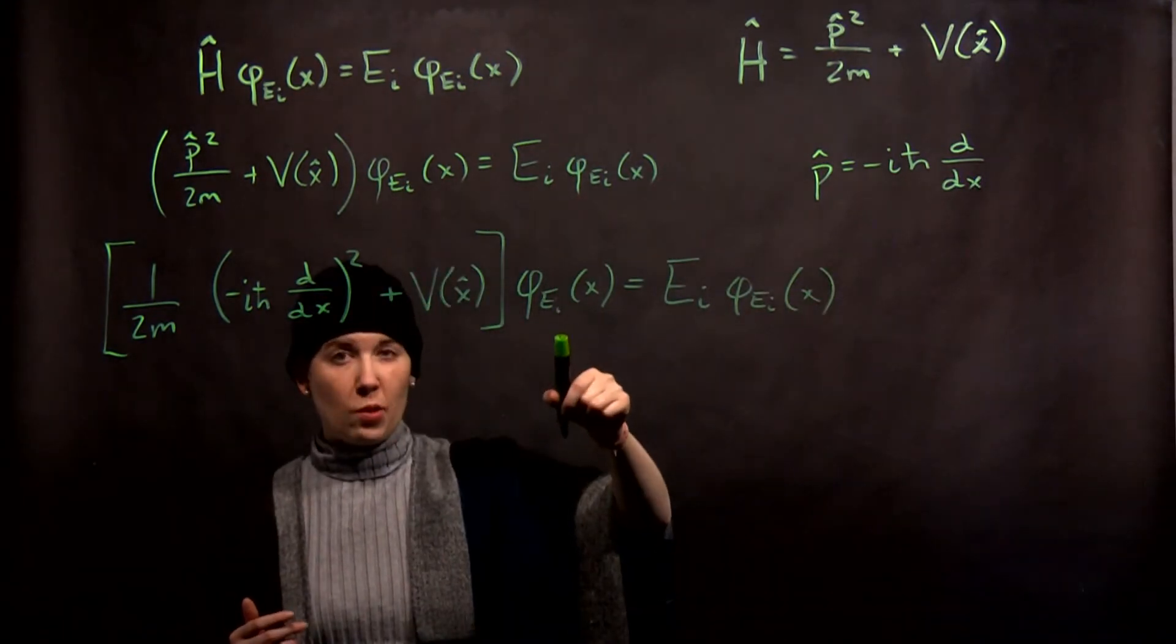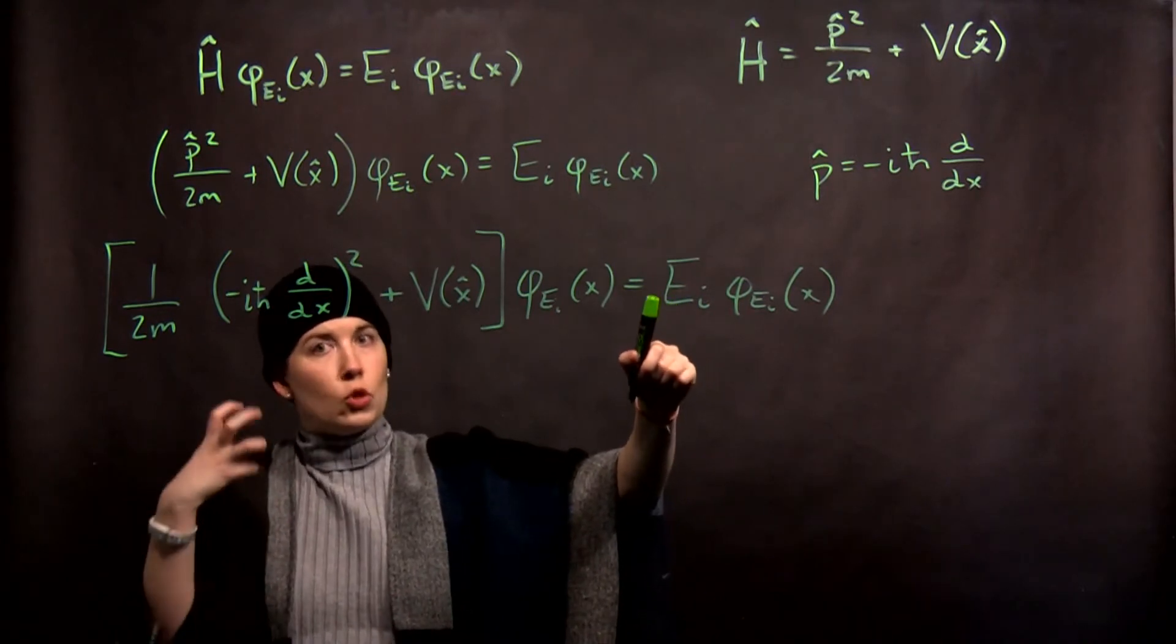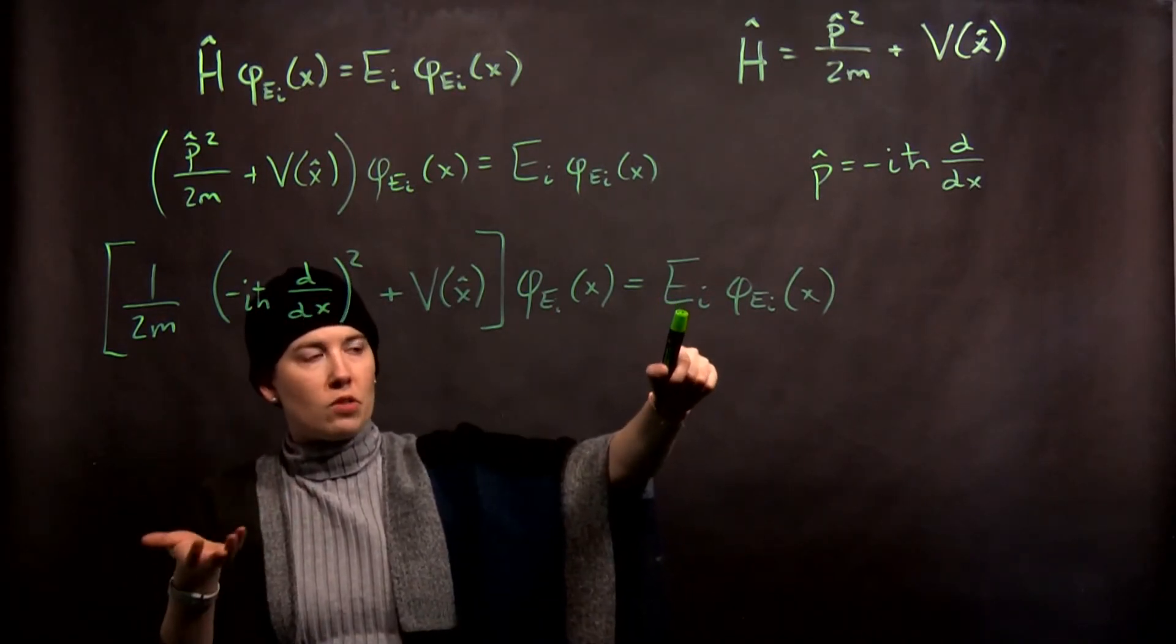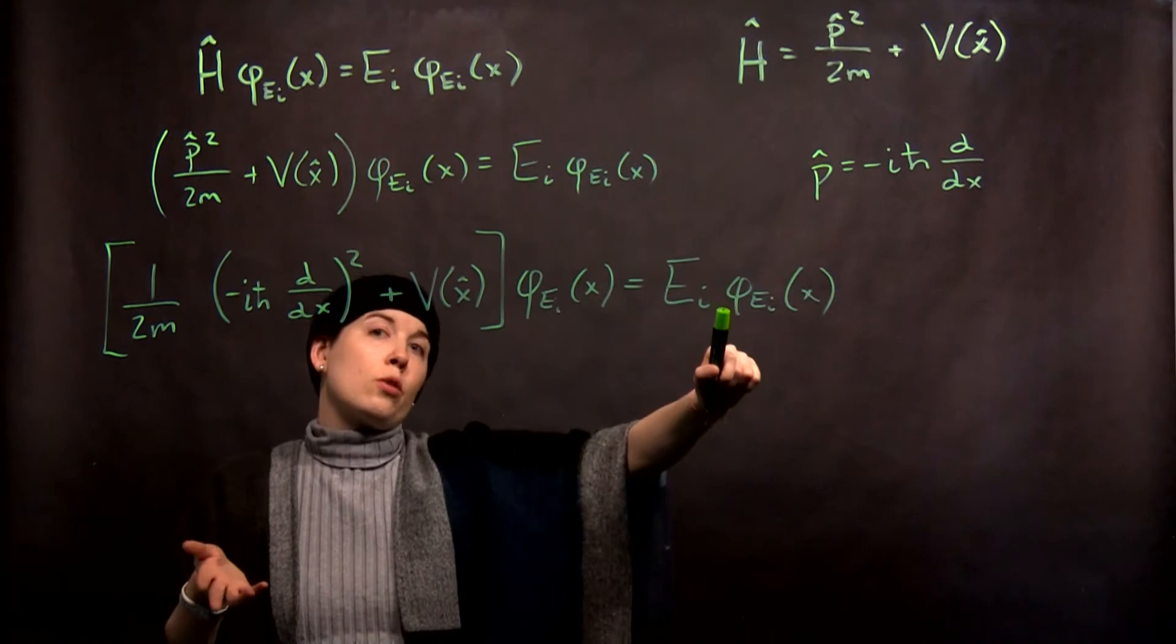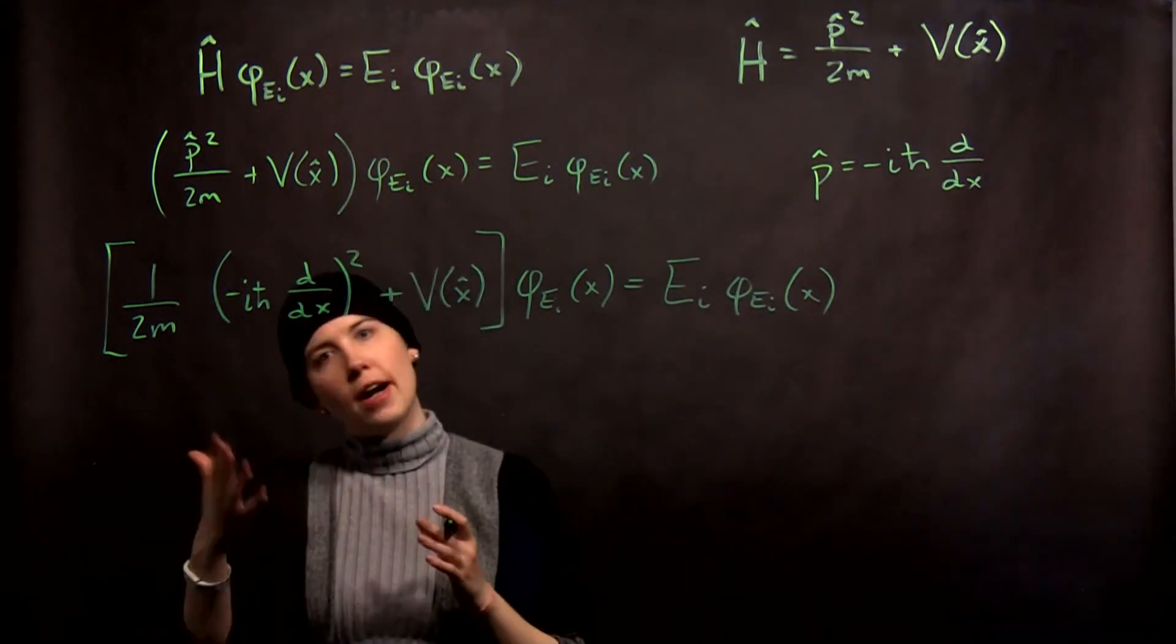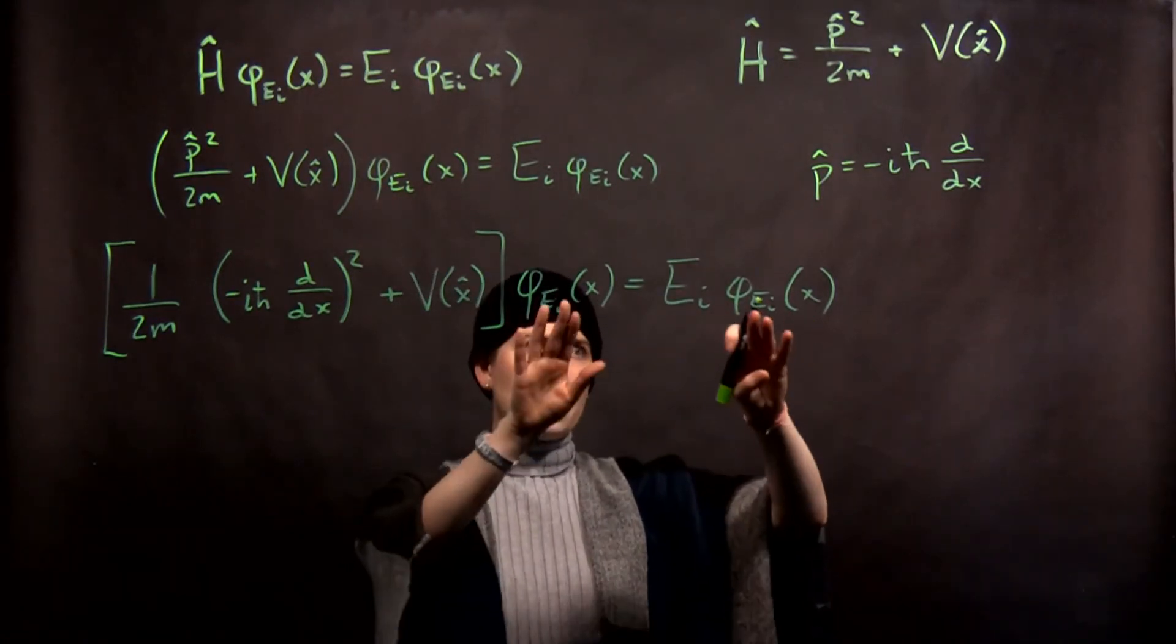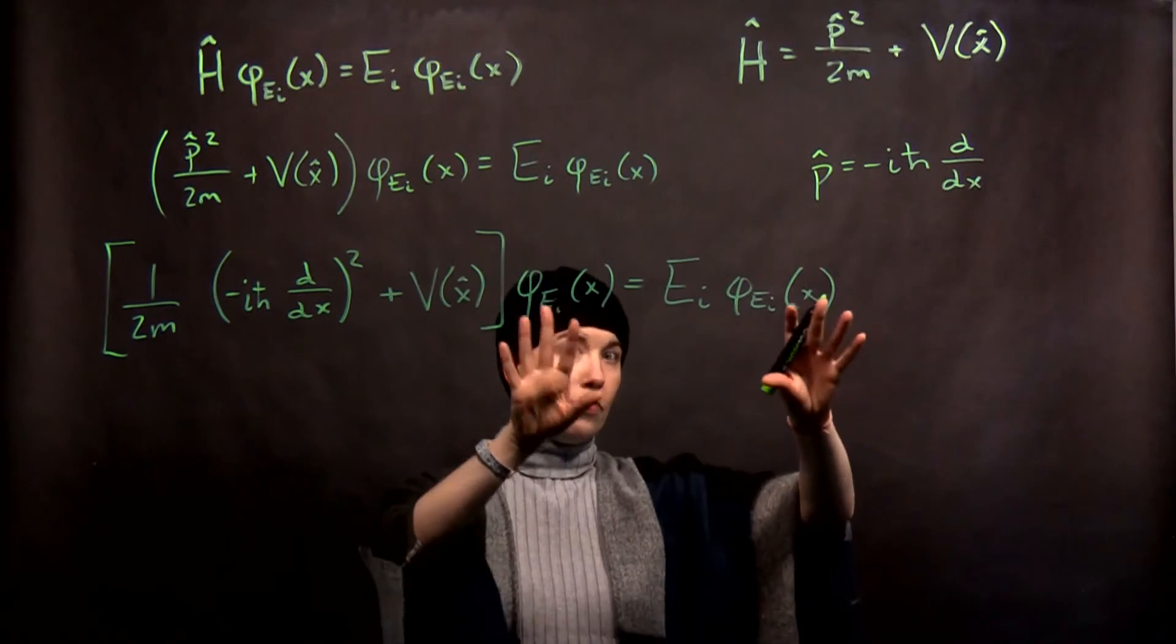And the reason it gets this fancy subscript is that each energy, so there's possibly discrete different energy possibilities, that each one is going to correspond to in fact a different energy eigenstate. The way that every eigenvalue has its own eigenvector in the discrete form, here now it has its own eigenfunction.